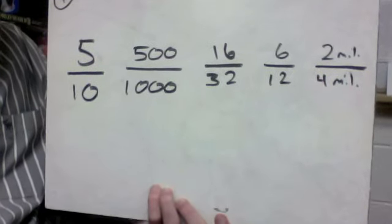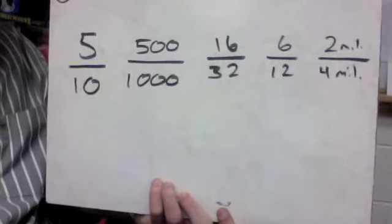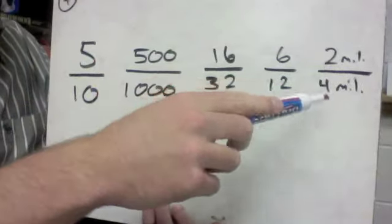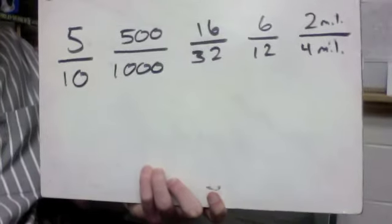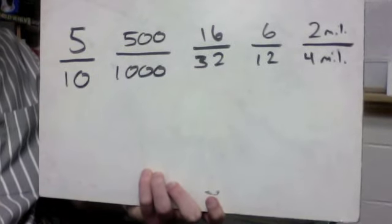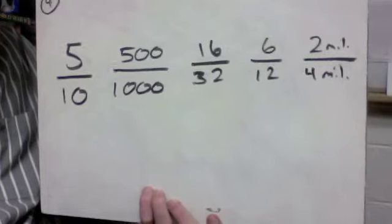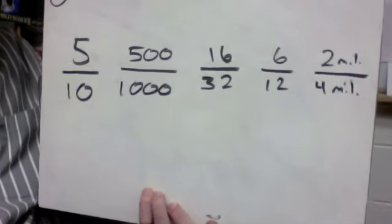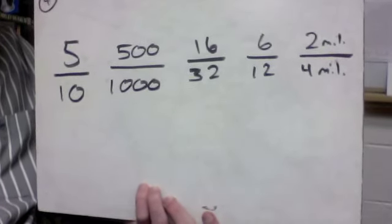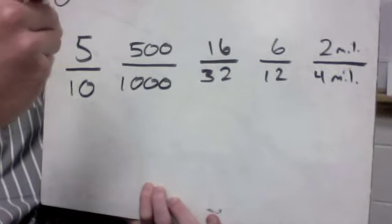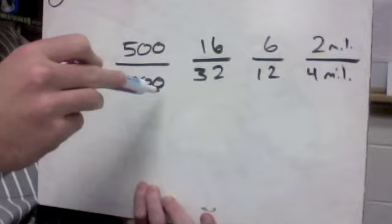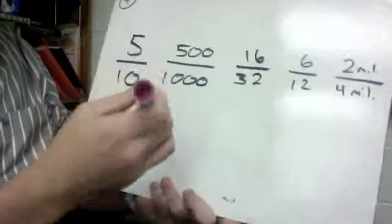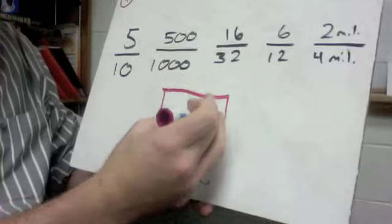Some fractions you're just going to have really big numbers to deal with. Five and ten aren't so big, but then we get 500 and a thousand, two million and four million. The easiest mistake that I think people, or the most common mistake that I think people make with fractions is that the bigger the number, the bigger the fraction. And that's absolutely not the case. It just all depends on how many pieces it's cut into. So this one's cut into 10 pieces, this one's cut into a thousand, cut into 32, cut into 12, and cut into four million. So you have to picture this using the same size piece.